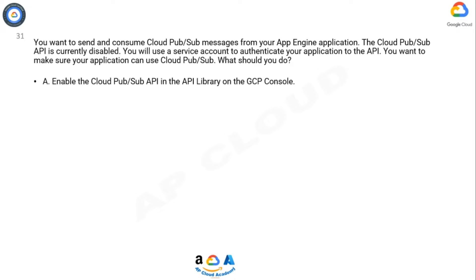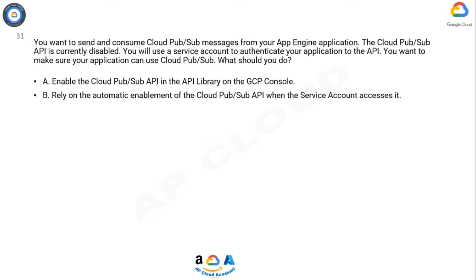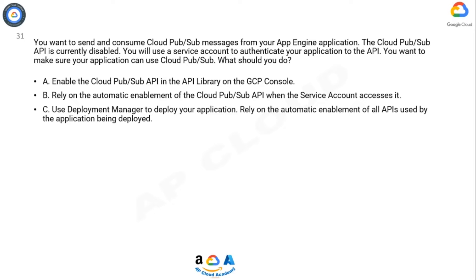Option A: Enable the Cloud Pub/Sub API in the API library on the GCP console. Option B: Rely on the automatic enablement of the Cloud Pub/Sub API when the service account accesses it.